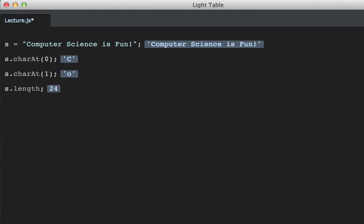s.length can be used to determine the length of a string. It's 24 characters long. s.charAt(s.length minus 1) will give us the last character. In this case, it'll give us an exclamation point. Invalid calls will return empty strings. Because there is no character at index 100, it returns an empty string.